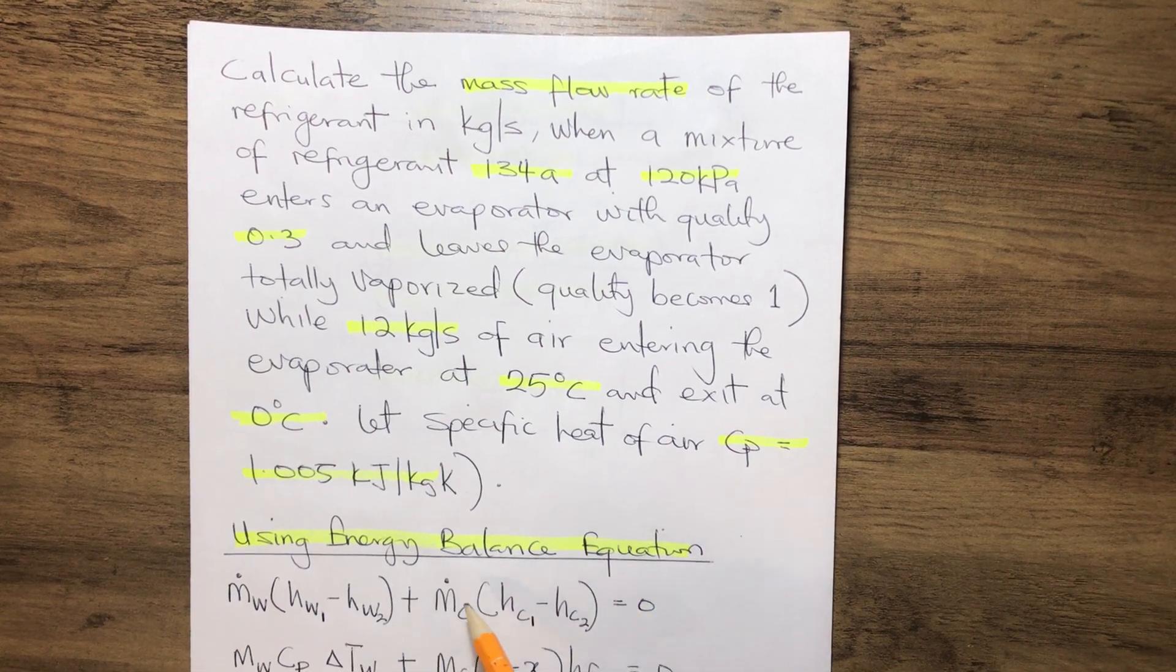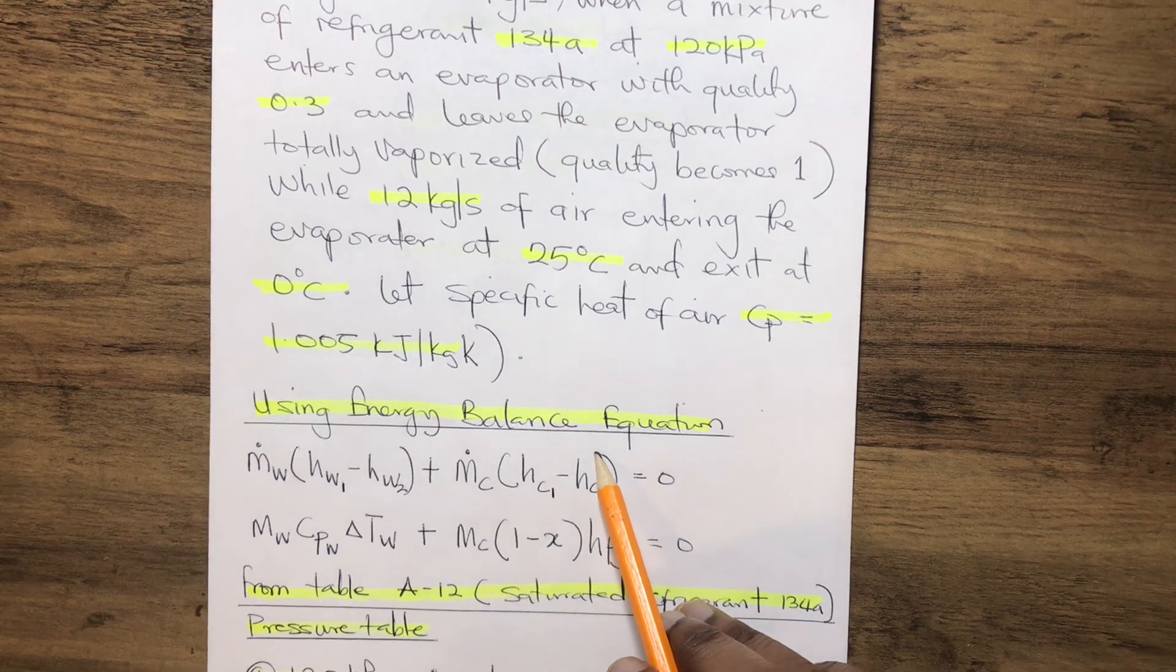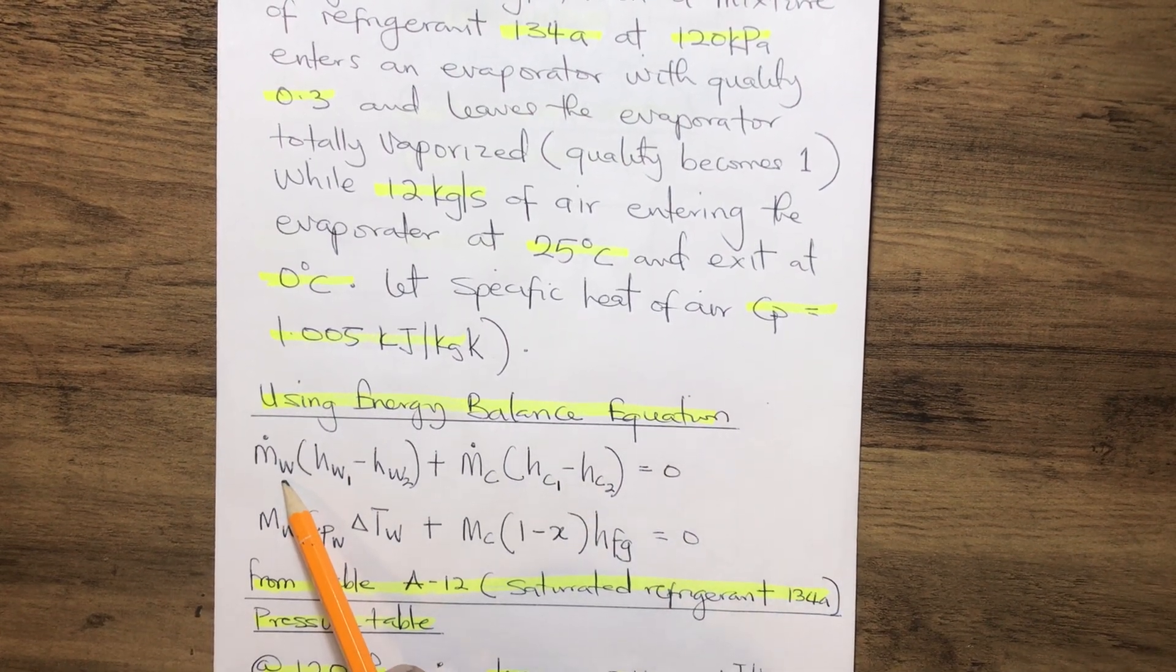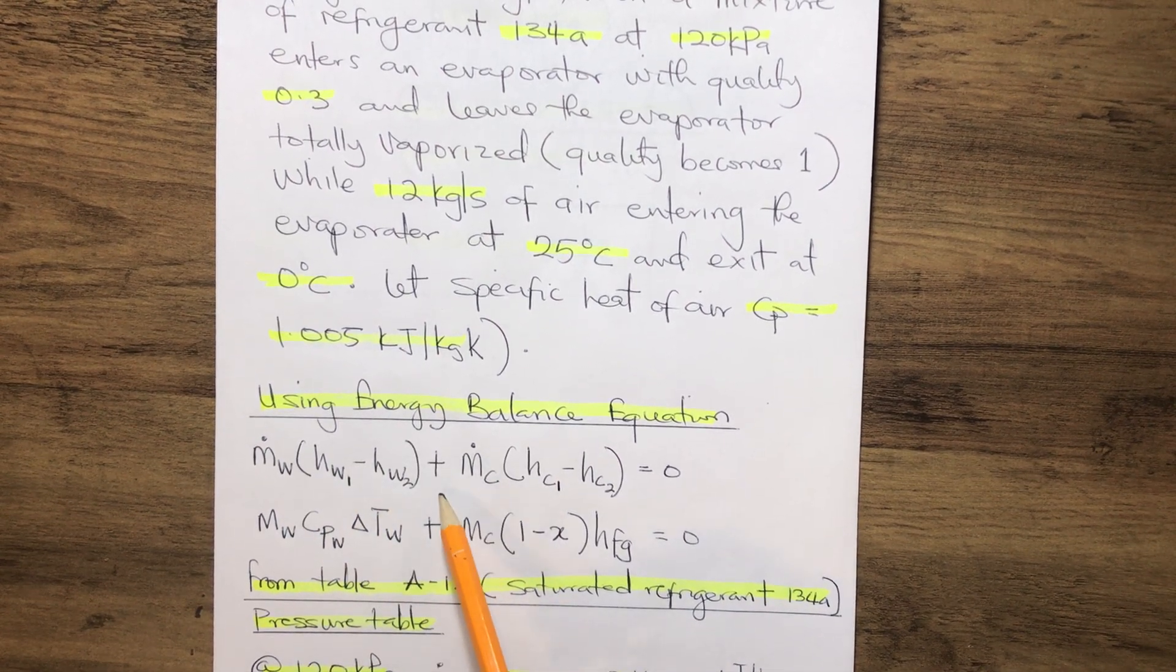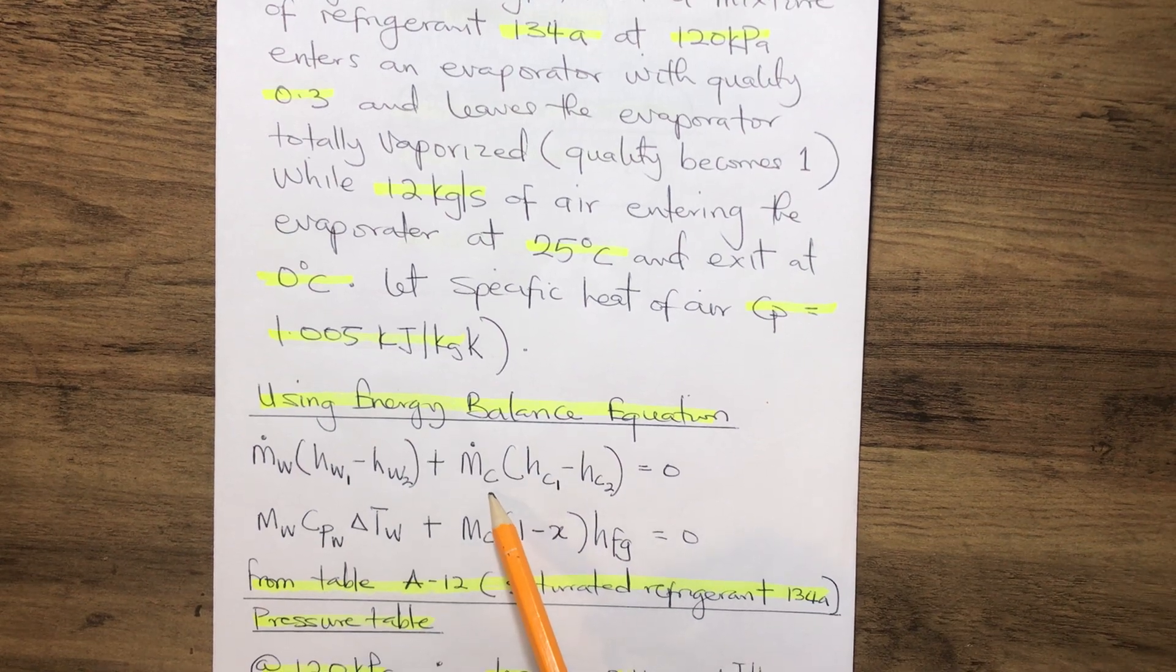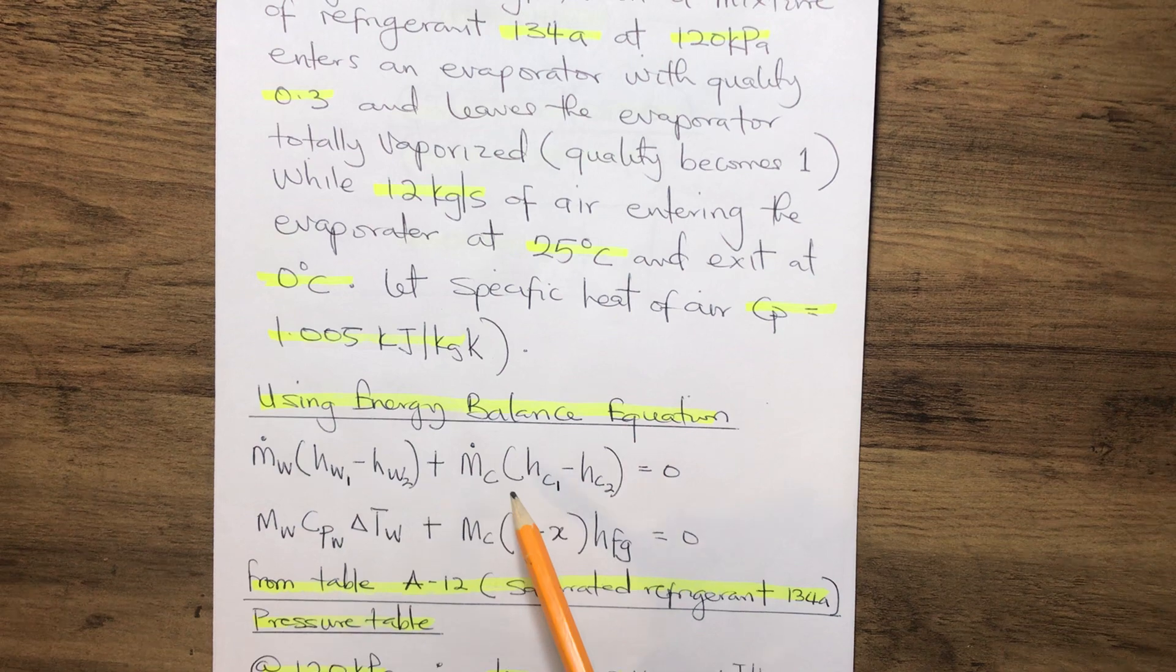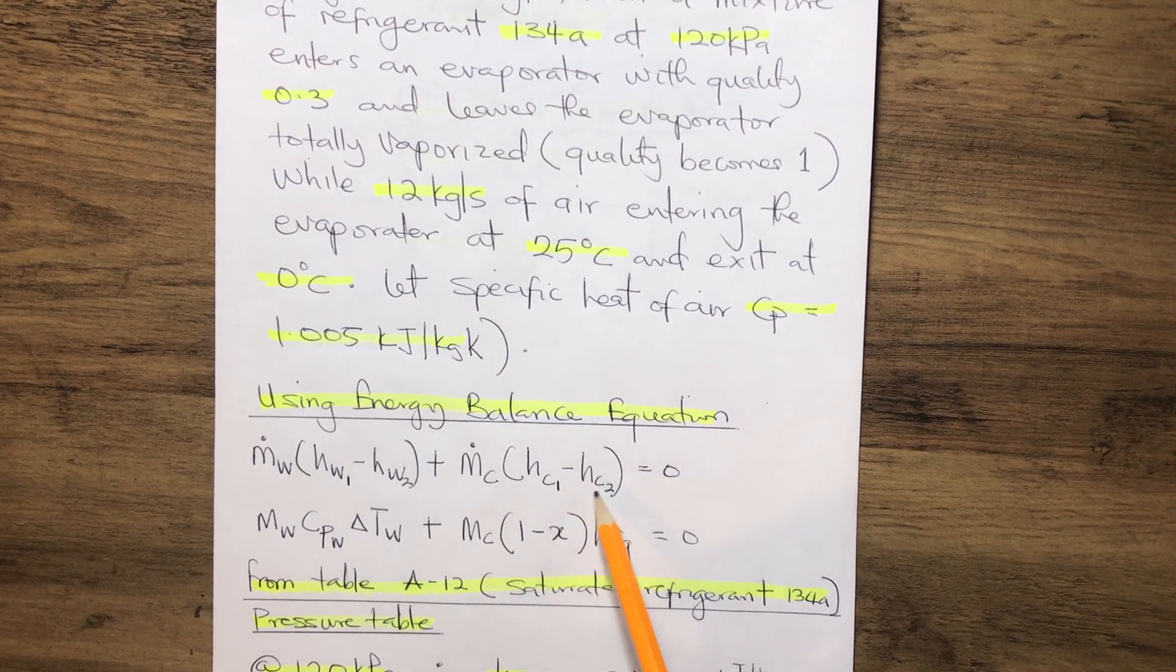Now, by using the energy balance equation, we have the mass of the working fluid to the product of variation of the entropy of the working fluid plus the mass of the cold fluid, the refrigerant, to the product of its variation of its entropy equals 0.